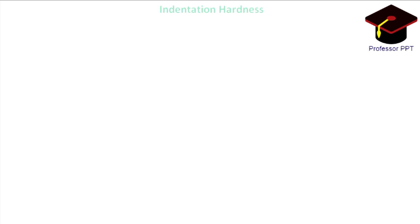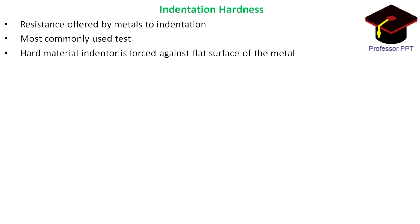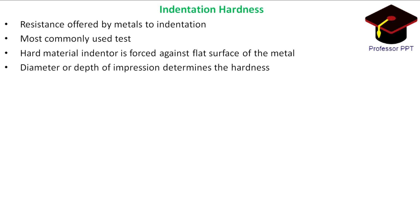Indentation hardness is the resistance offered by metals to indentation. It is the more commonly used test. All the indentation hardness testing methods are based on the principle of forcing a hard material called an indenter against a flat surface of the metal whose hardness is to be measured under a fixed load. The diameter or the depth of impression determines the hardness of the material.